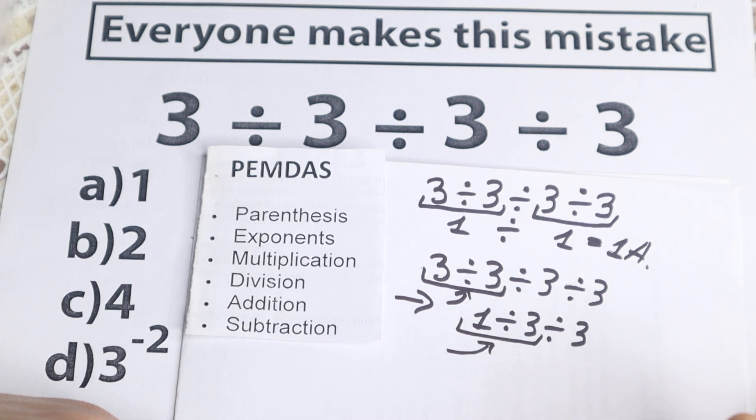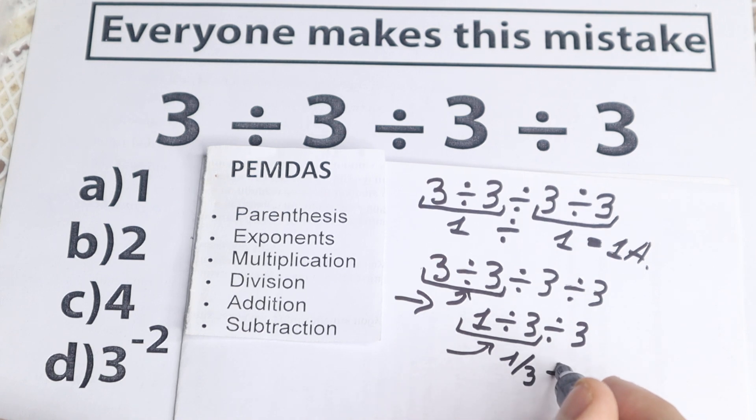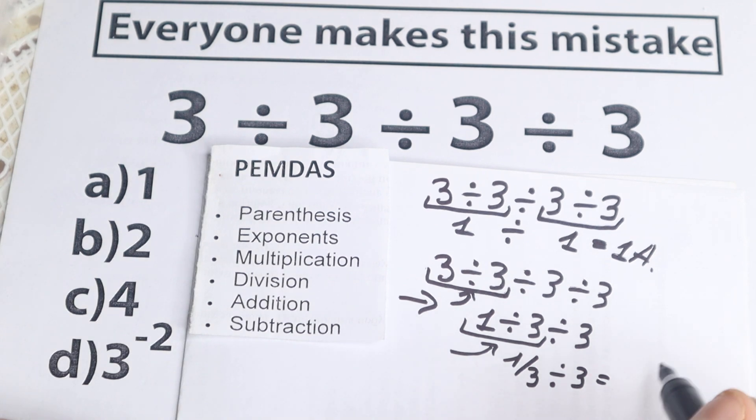So 1 divided by 3. We can easily write as a fraction. So if you write as a fraction, this is 1/3 and divided by 3. So as a result, 1 over 9. 1 over 9.